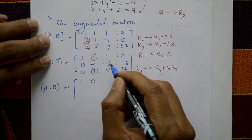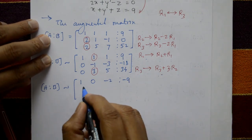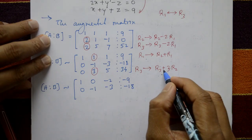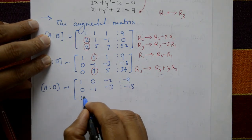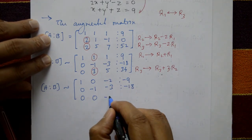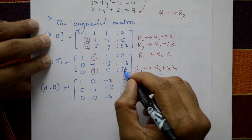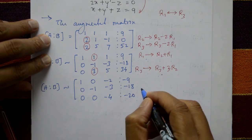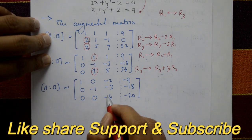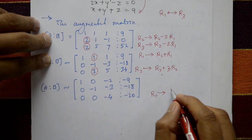The augmented matrix is now equivalent. R1 = R2 + R1: [1, 1, -1 | 0] added gives [1, 0, -2 | -9]. The second row is unchanged. For R3 = R3 + 3R2: 0, -3 + 3 = 0, and -9 + 4 = -4, with -54 + 34 = -20. So R3 becomes [0, 0, -4 | -20].